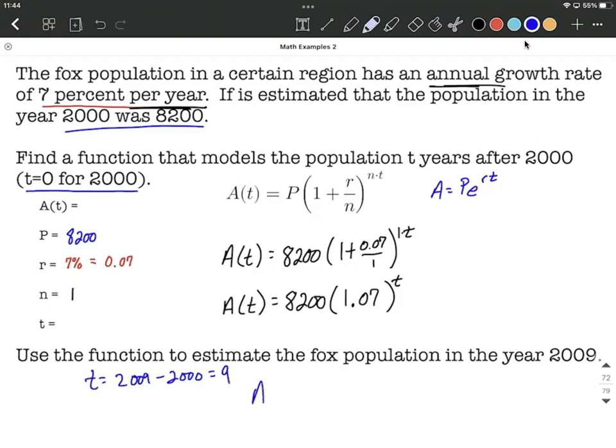We're going to evaluate this function: a of 9 equals 8,200 times 1.07 raised to the 9th power. Get the calculator out to help us out.